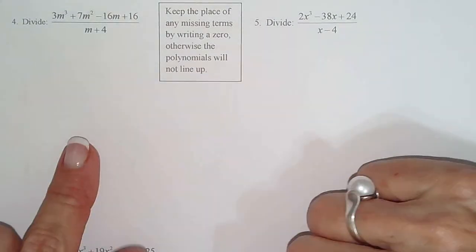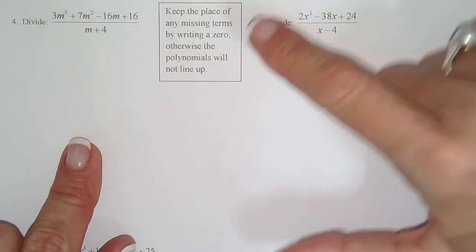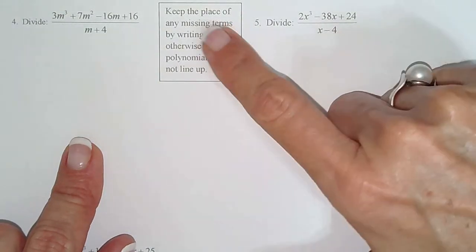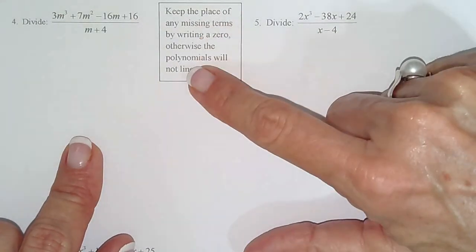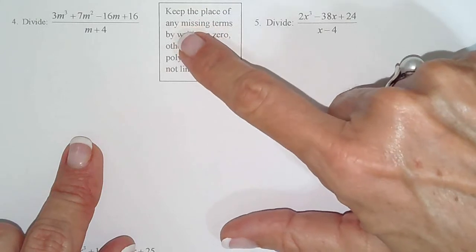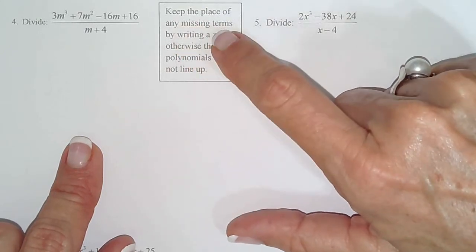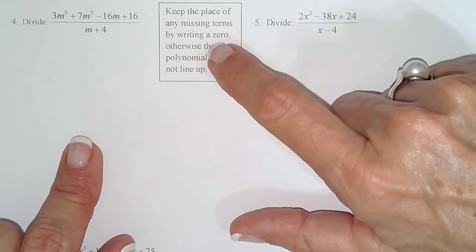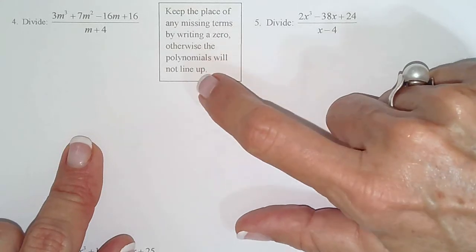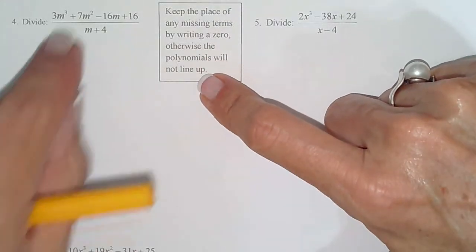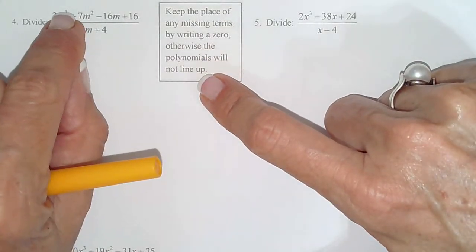So we have a little reminder here. Well, not a reminder. This is a little piece that maybe you don't know. If there is a missing term, we have to write a zero in its place. Otherwise, the polynomial won't line up. So before you start, you look for missing terms.